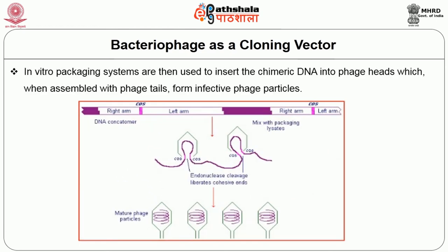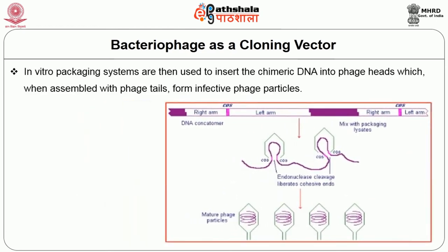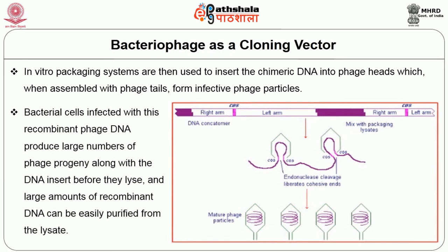In vitro packaging systems are used to insert the chimeric DNA into phage heads, which when assembled with phage tails form infective phage particles. Bacterial cells infected with this recombinant phage DNA produce large numbers of phage progeny along with the DNA insert before they lyse, and large amounts of recombinant DNA can be easily purified from the lysate.